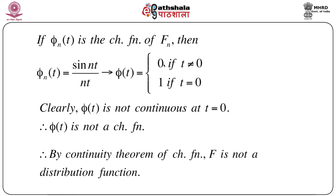It is clear that φ(t) is not continuous at t = 0. A sequence of characteristic functions converges to a function which is unfortunately not continuous at a particular point. We know that a characteristic function is always uniformly continuous, so φ(t) is not a characteristic function. By the continuity theorem of characteristic functions, since the sequence of characteristic functions converges to a function which is not a characteristic function, the corresponding sequence of distribution functions converges to a function which is not a distribution function. This proof is very beautiful from the characteristic function point of view.